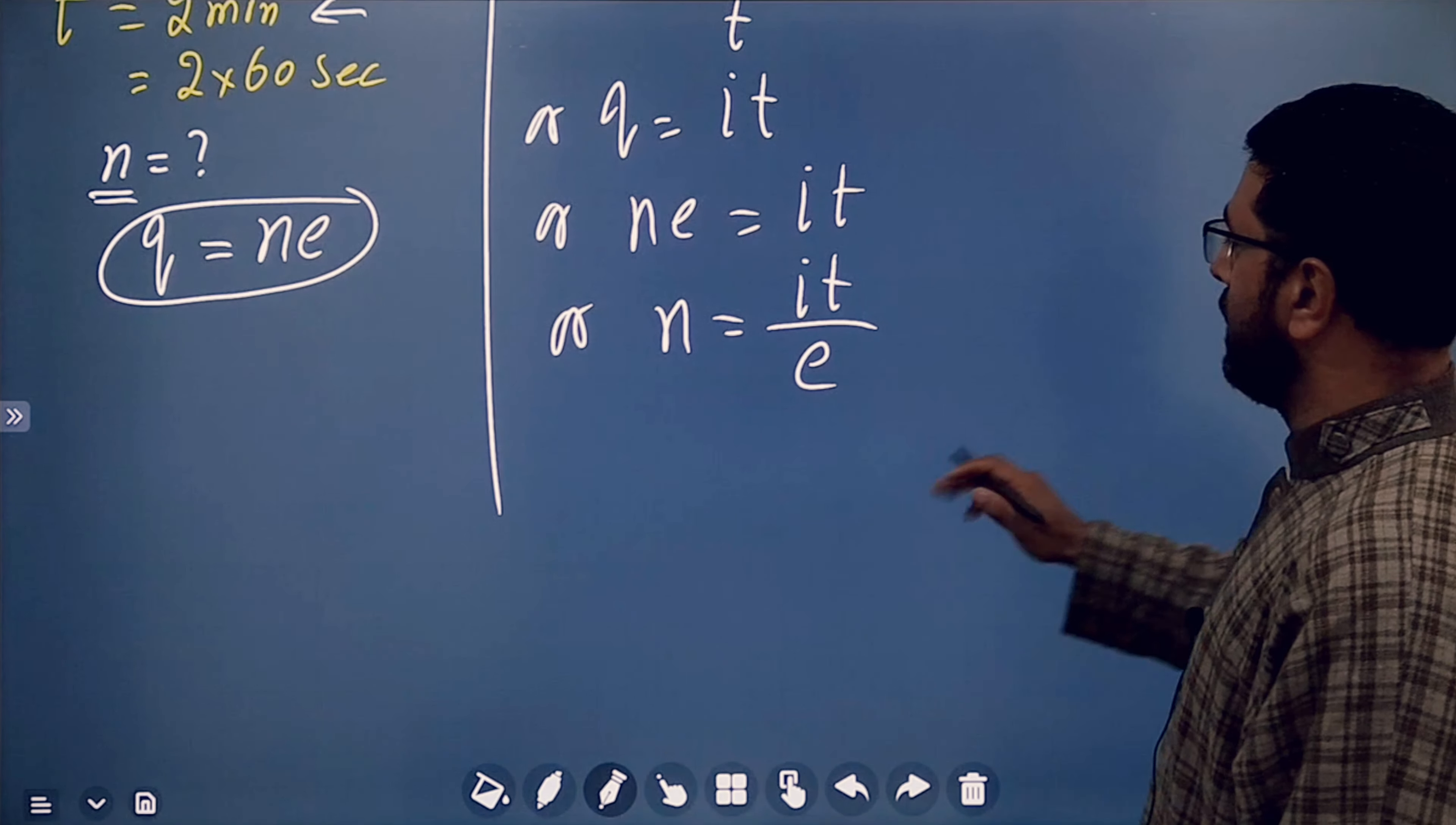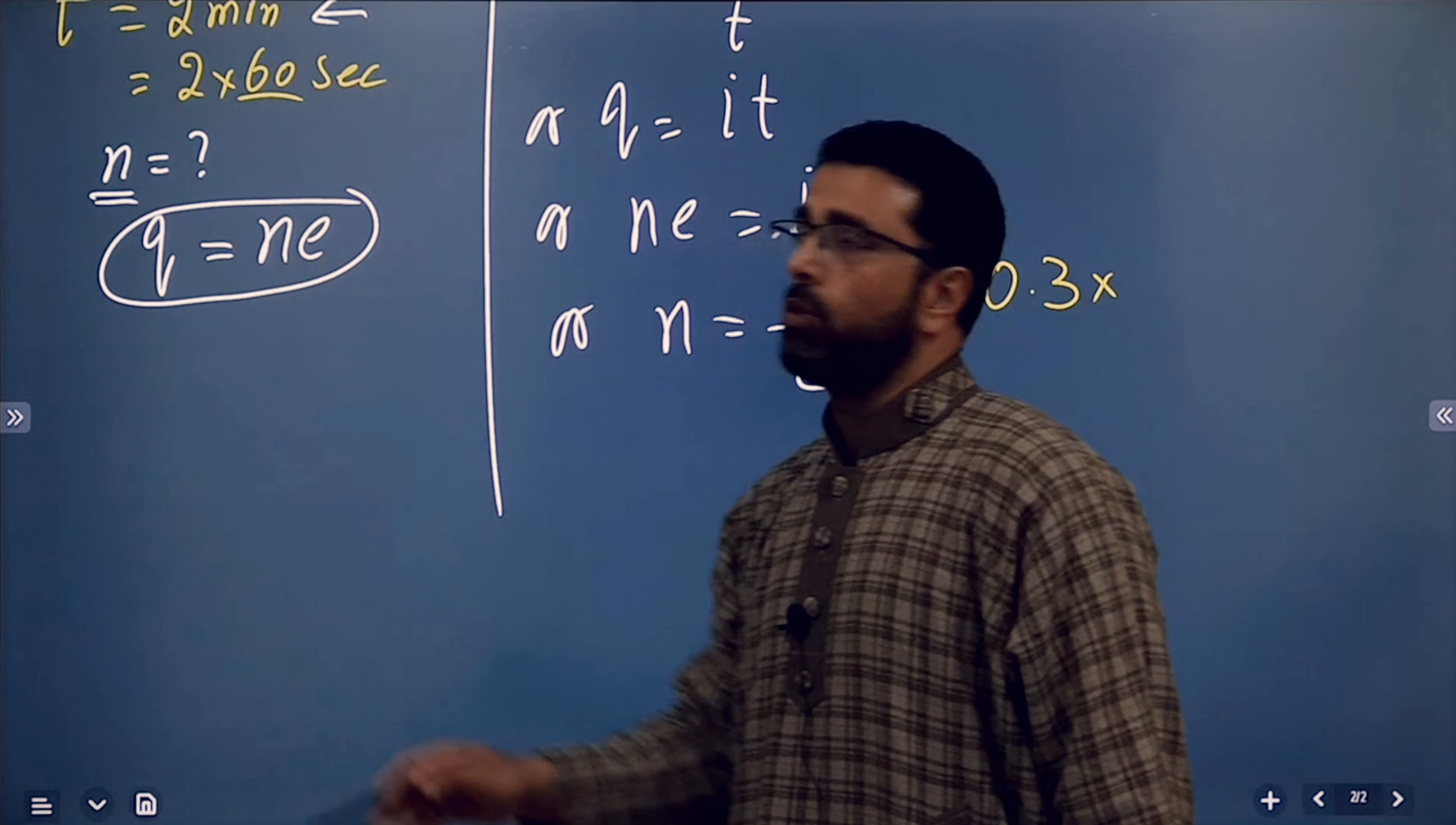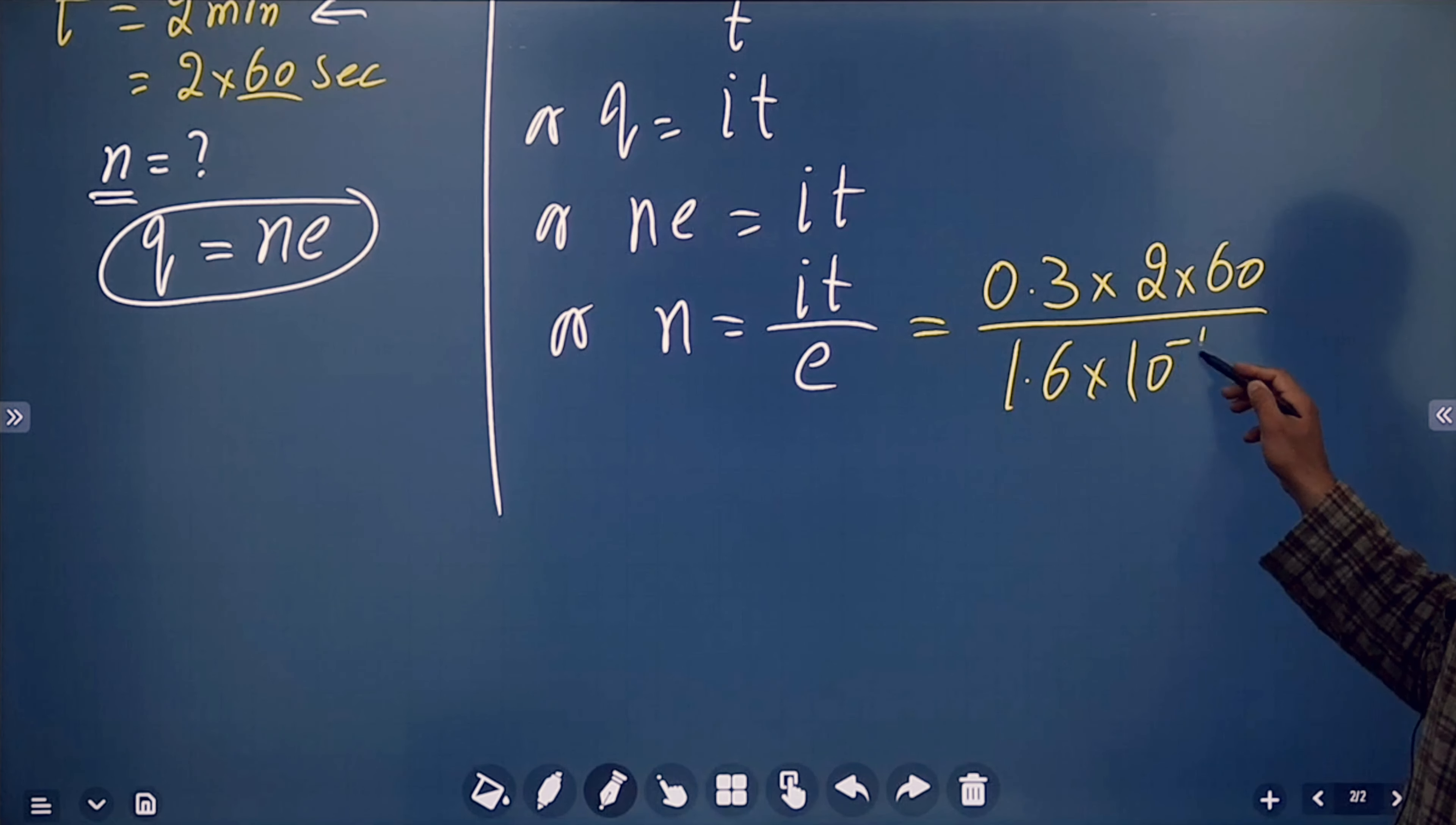So let's substitute the values. i is 0.3 amps. t is 2 minutes, which means 2 into 60 seconds. Divided by e is 1.6 into 10 to the power minus 19.